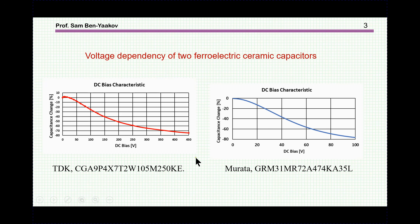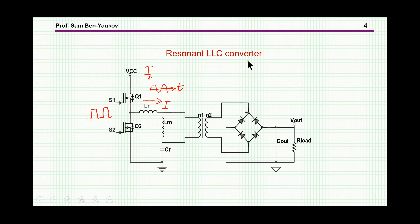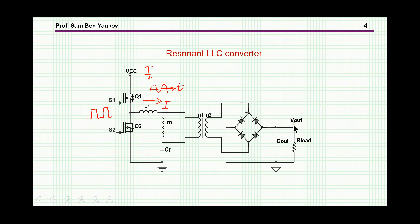So there is a way to get a variable capacitor which is voltage-controlled, and this is the idea behind the papers I'm presenting. Let's consider a resonant LLC converter. We have a half-bridge configuration generating a square wave which is fed to the resonant circuit composed of two inductors and a capacitor. Due to the fairly high Q, the current will be sinusoidal. Part of this current is fed to the output via a transformer and rectifier to produce a DC output voltage. A way to analyze the circuit is to use the first harmonic approximation, assuming sinusoidal excitation, which is justified by the approximately sinusoidal current.